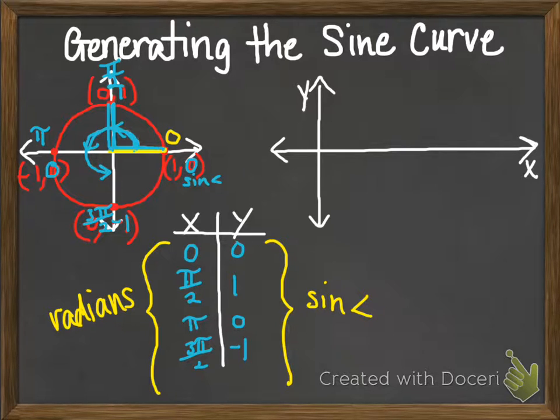And then if I made one full turn back to the zero again, that's 360 degrees or 2π radians, then my y value again is zero.